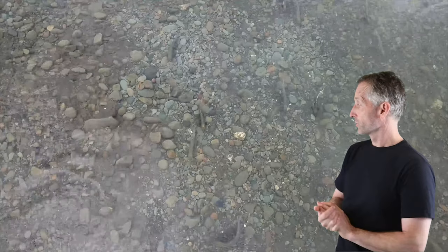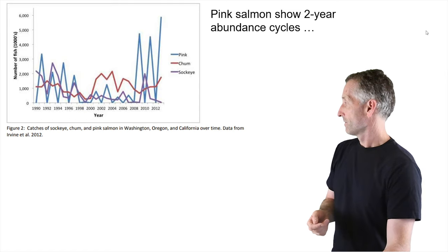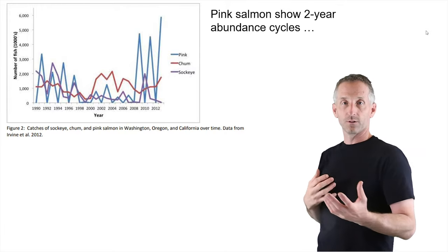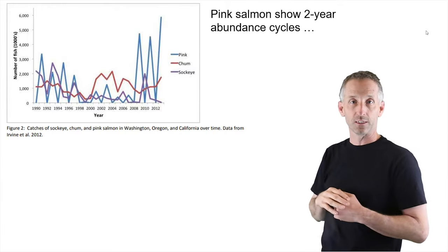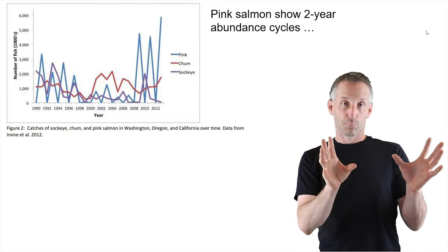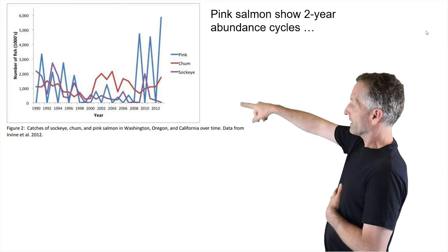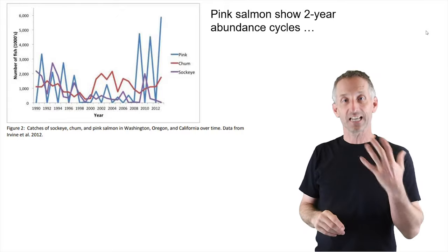Let's talk about pink salmon first. This year there were tons of pink salmon at my cabin — here's a sequence of drone footage passing over the pink salmon. There were probably 500 pink salmon right in that area. But last year there were none. The year before that they were super abundant again, and the year before that, none. So there's a two-year cycle: every second year they're really abundant. Data from streams in Washington, Oregon, and California show three different salmon species, with pink salmon displaying this dramatic cycle of fluctuations.